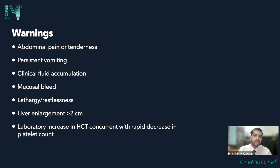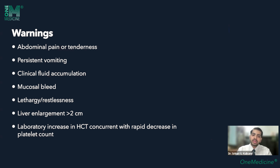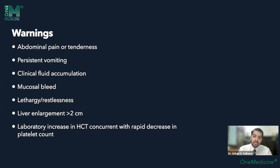Additional warning signs include mucosal bleeding, lethargy or restlessness — which should trigger concern for complications — and liver enlargement of more than two centimeters. Clinical examination is very important here; we should not base decisions solely on platelet count or hematocrit. A laboratory increase in hematocrit of more than 20% concurrent with a rapid decrease in platelet count is an alarming warning sign that must be recognized and acted upon.